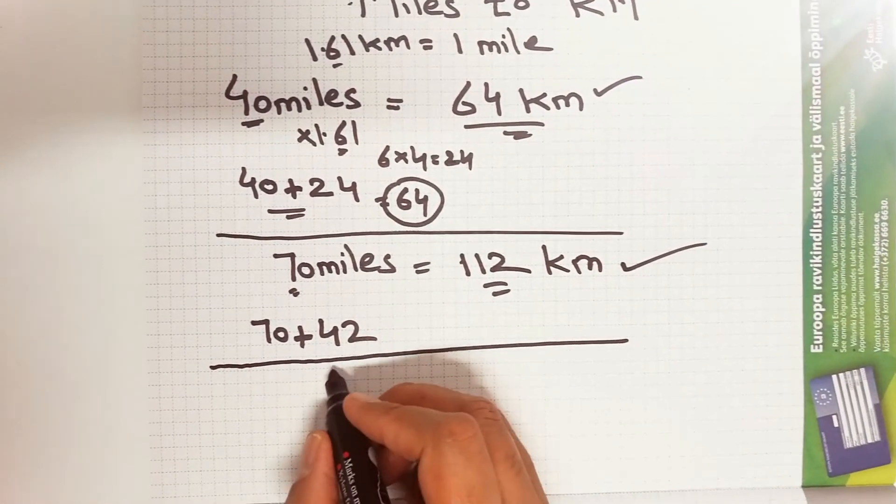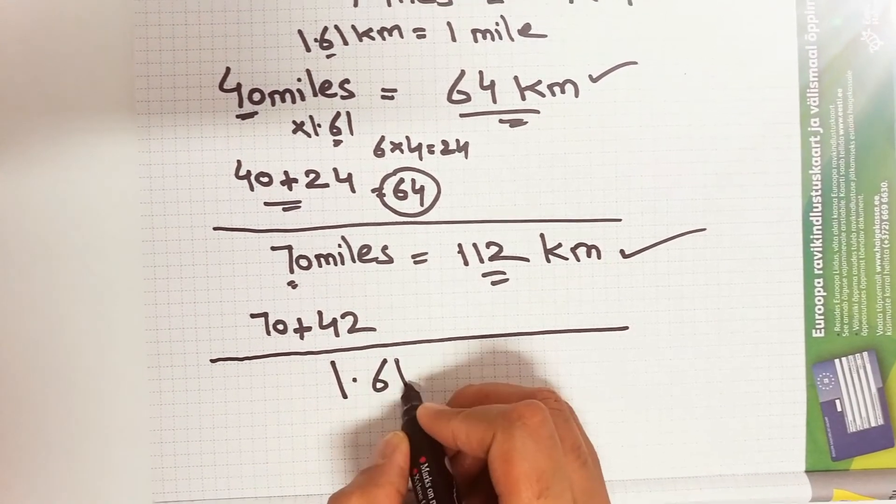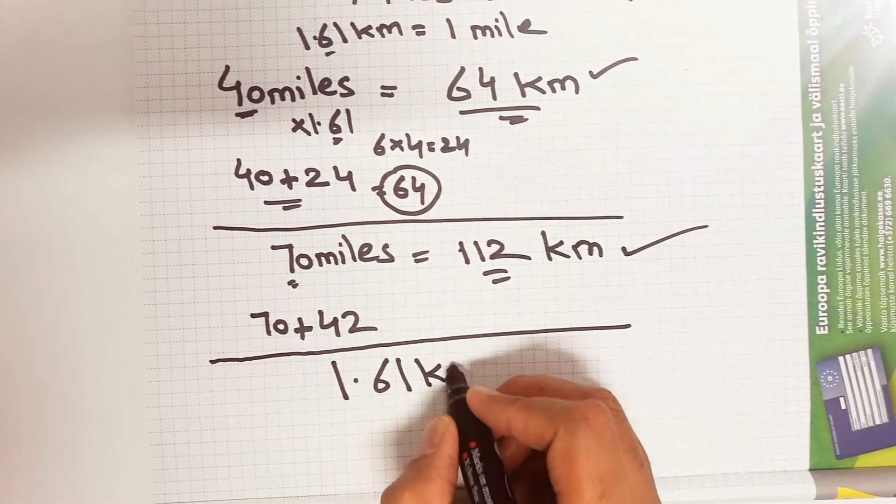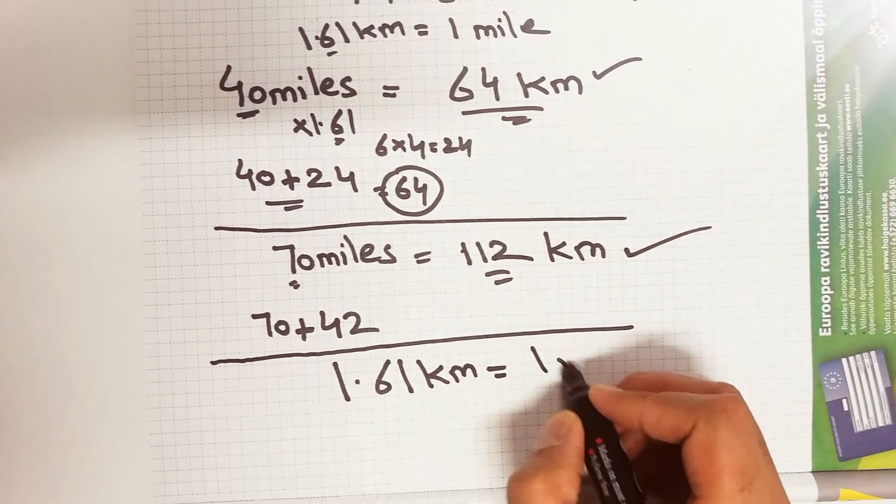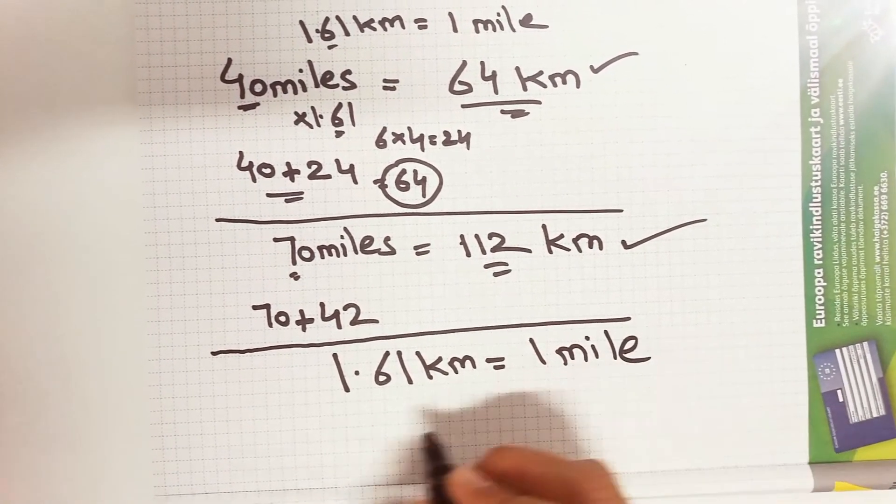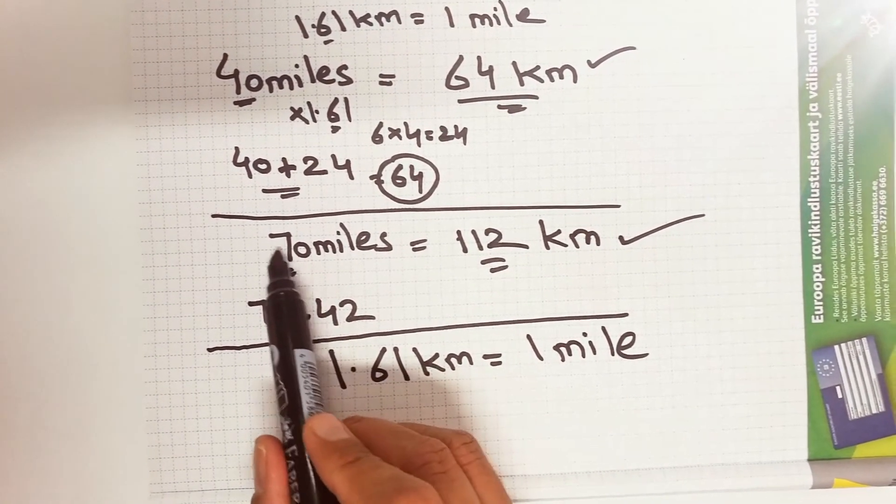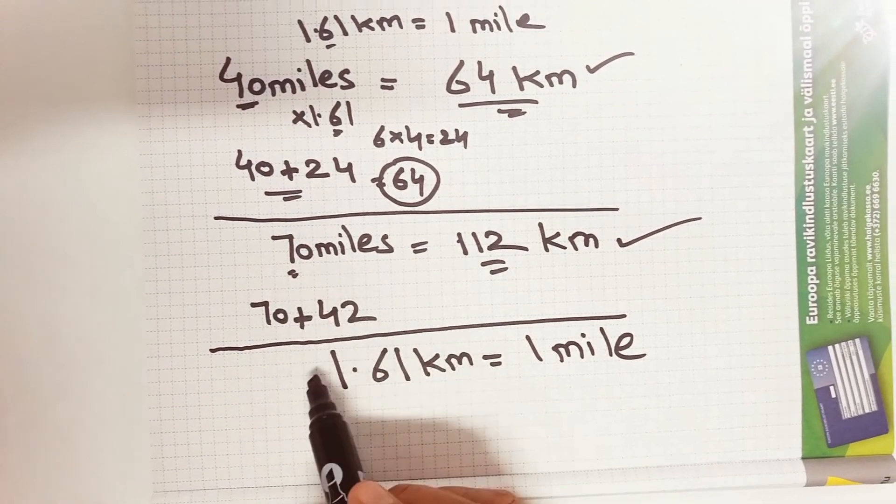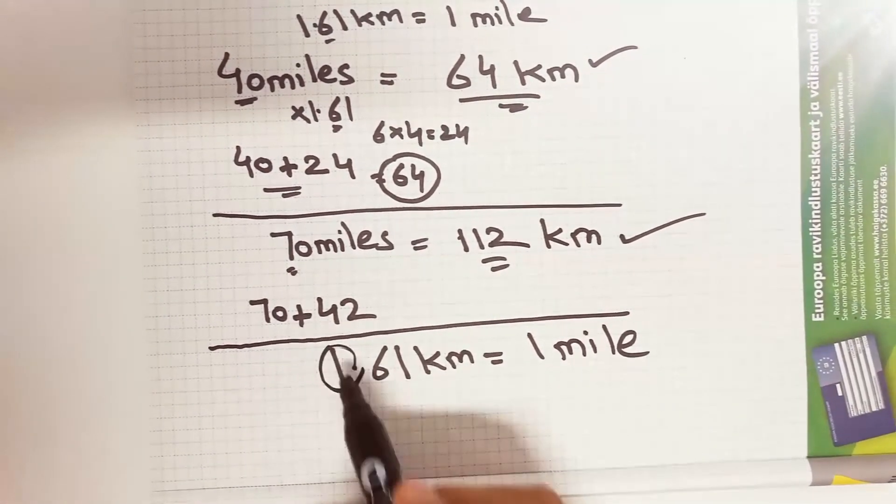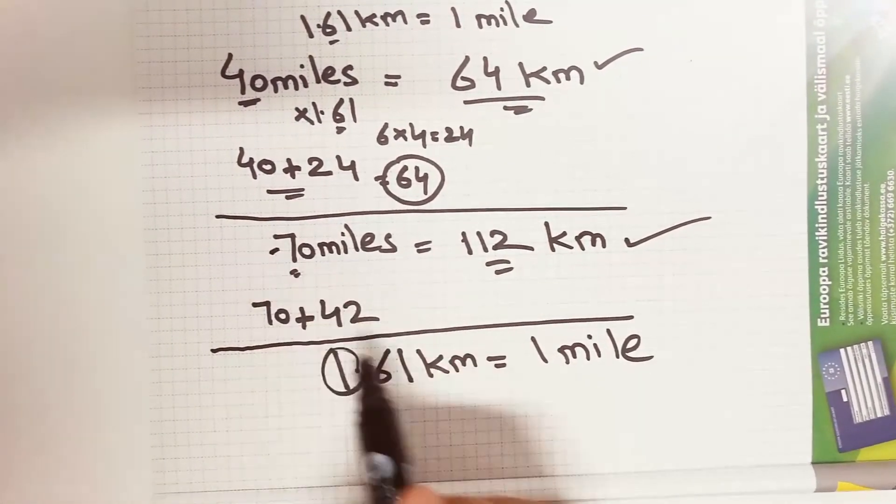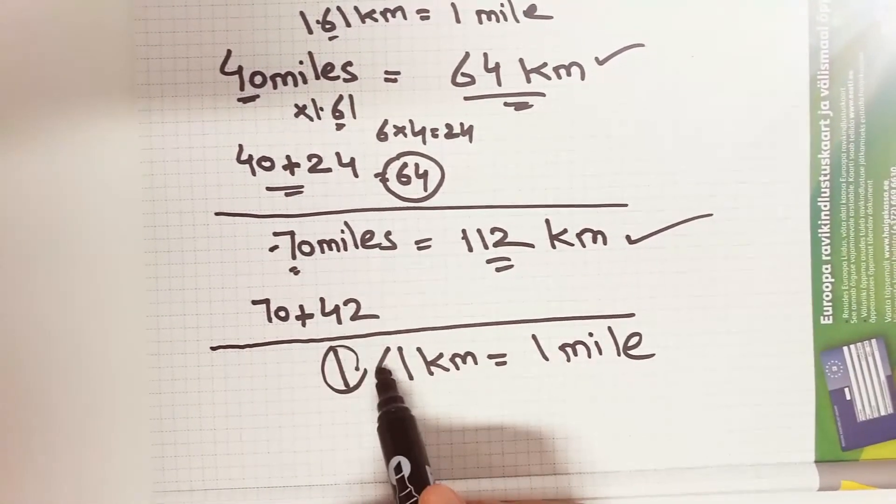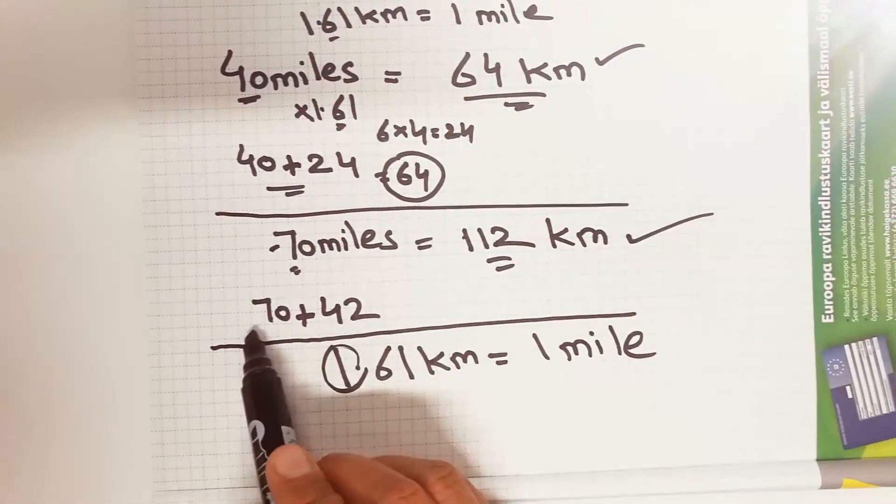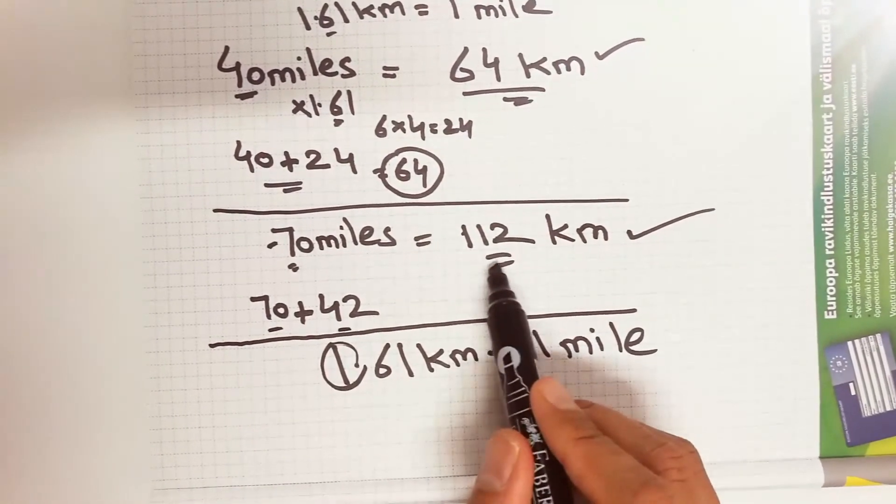You just have to remember one simple thing which is 1.61 kilometers equals to 1 mile. And then what you have to do is multiply this whole value 70 with only 1, and then multiply this 7 only with this 0.6 which is 7 multiplied by 6 which is 42. So you get 70 plus 42, the answer is 112.